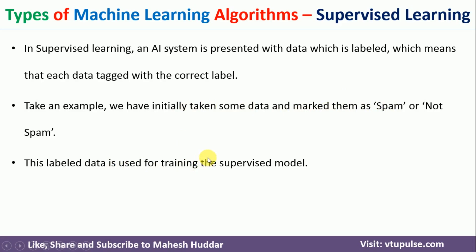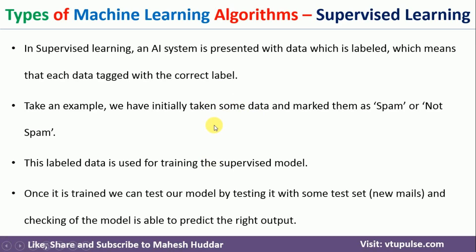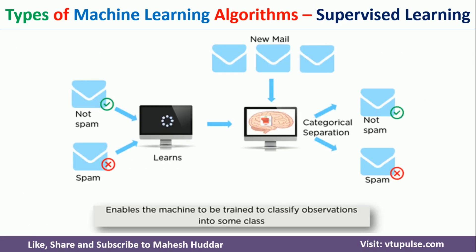This labeled data is given as input to the supervised machine learning model for training. As you go on giving this data to the model, the model will keep learning. Once training is over, you can test the model with new emails, and those new emails will be classified into either spam or not spam. Based on the result, you can check the accuracy of the model. Diagrammatically, we give emails with labels such as 'not spam' or 'spam' as input to the learning system. It learns, a model is created, and then new emails without labels are given — the learned model classifies them as spam or not spam.